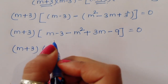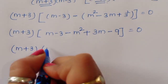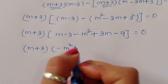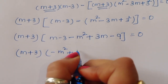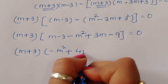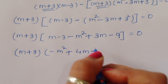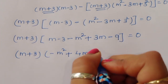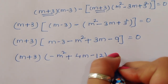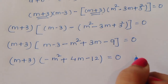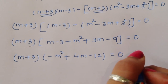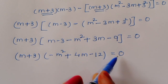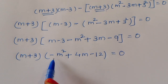Simplifying inside the bracket: minus m squared plus 4m minus 12. So we have (m plus 3)(minus m squared plus 4m minus 12) is equal to 0.